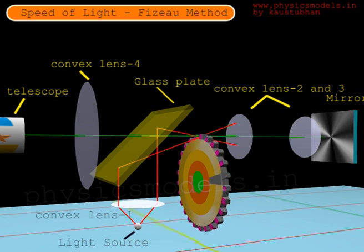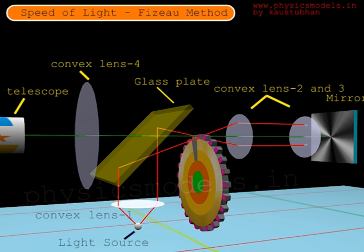We start with a light source at the bottom, and the light passes through a convex lens, which converges the beam of light on an inclined glass plate, which partially reflects that beam. After that, the beams get reflected from the glass plate, pass through the gaps between the teeth of a rotating gear, and strike a convex lens 2.